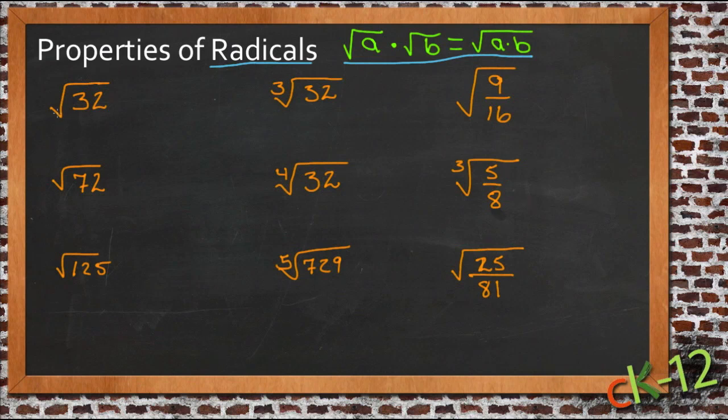Let me show you how that works. If we have the square root of 32, and we're trying to find out what that is, the square root of 32 is not even. The square root of 36 is 6, and the square root of 25 is 5, so it's going to be somewhere between 5 and 6.